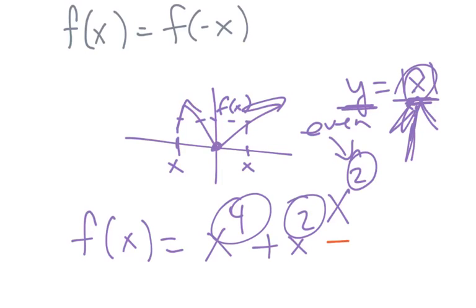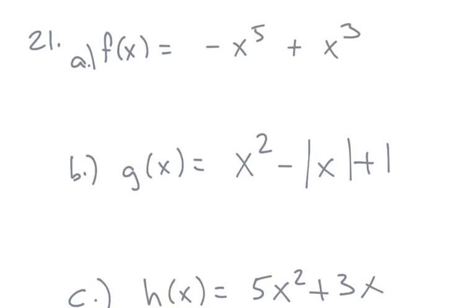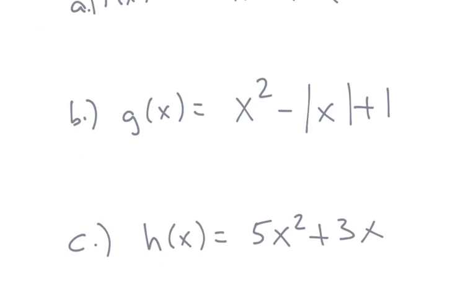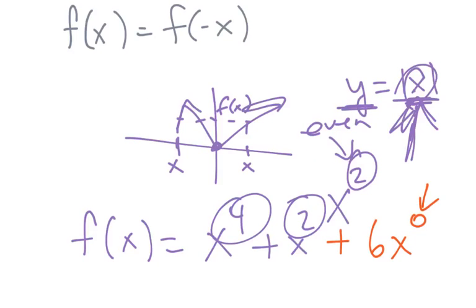By the way, you can also insert a constant, because a constant has an x value with an exponent of 0, because anything raised to 0 power except for 0 is 1. Hence, if everything is even, like in B, we know it's even. The function is even.